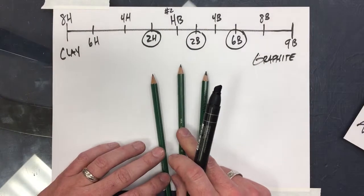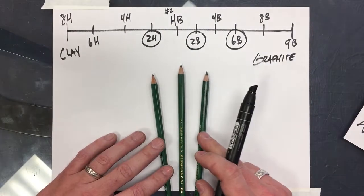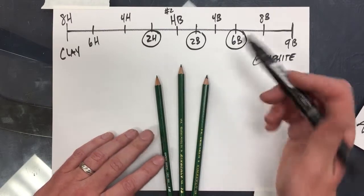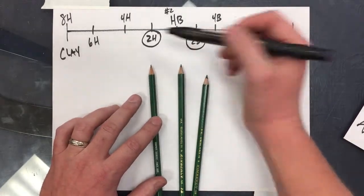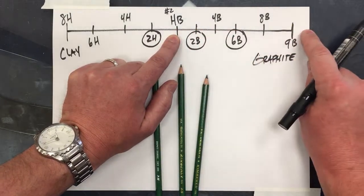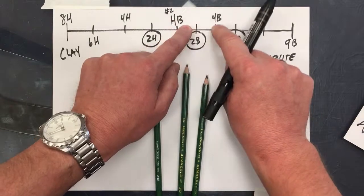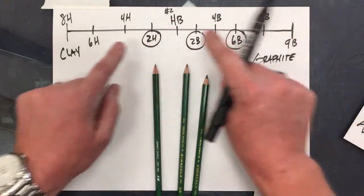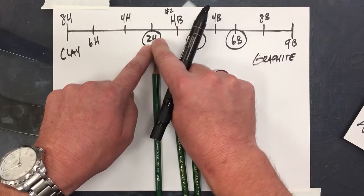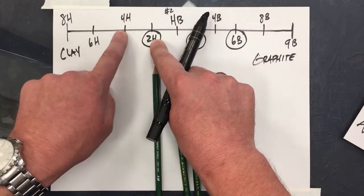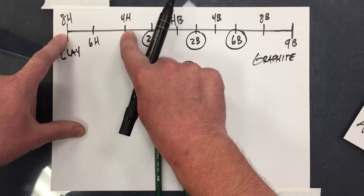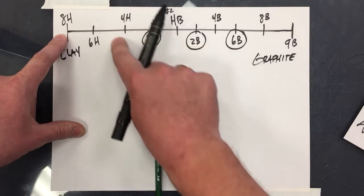Other art teachers, other professionals may have other opinions, this is just mine. 2H, I would say from my observation that the differences between these, you know, the step between is not as great as the change that you see here. Going from HB to 2H is a big step, and from 2H to 4H is a big step.